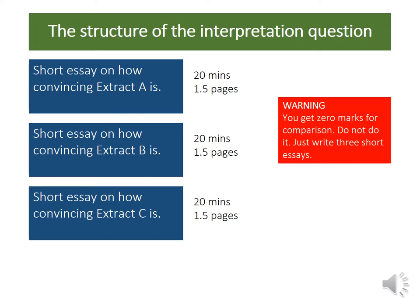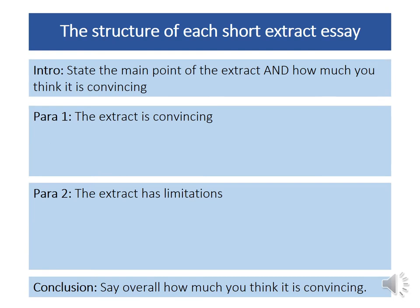So, what do we do in each one of these mini essays? Each one is relatively simple — you need an intro, two paragraphs, and a conclusion. In the introduction, you're going to state the main point of that extract and how much you think it's convincing. You're going to do a paragraph on how it's convincing, a paragraph on how it's limited, and then a very short conclusion saying overall how much you think it is convincing or not. You do that three times: once for extract A, once for extract B, and once for extract C.